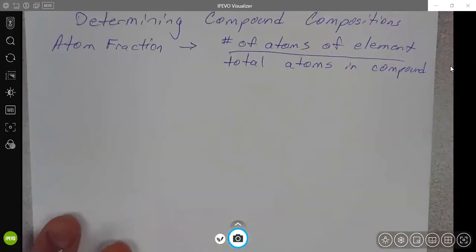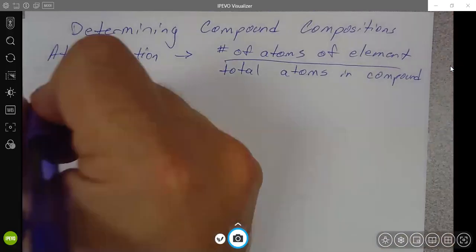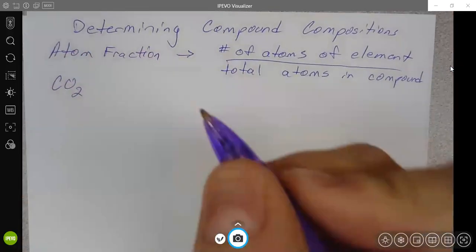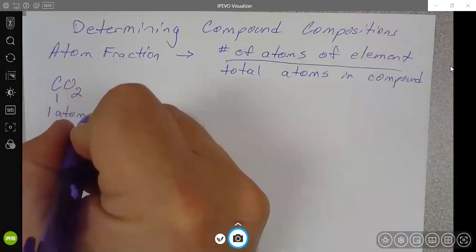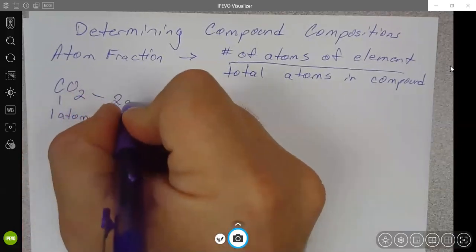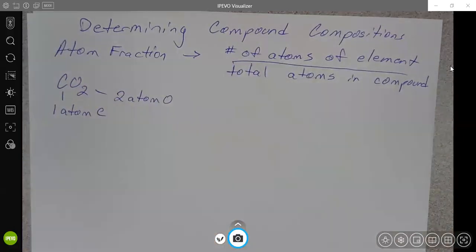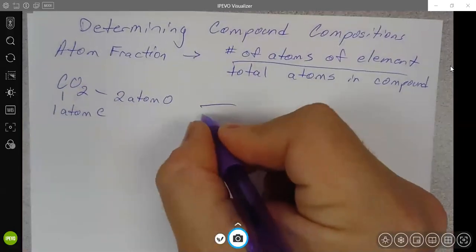And so if you have something like, say, carbon dioxide, this has one atom of carbon. This has two atoms of oxygen. So this is three atoms total.